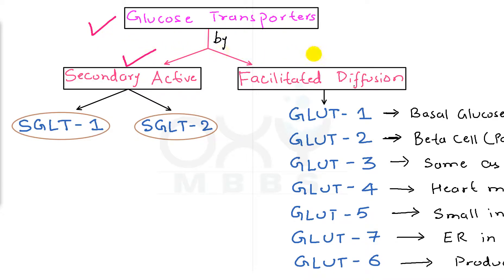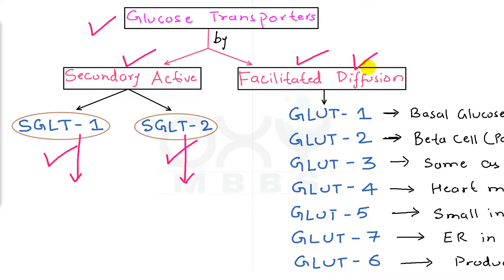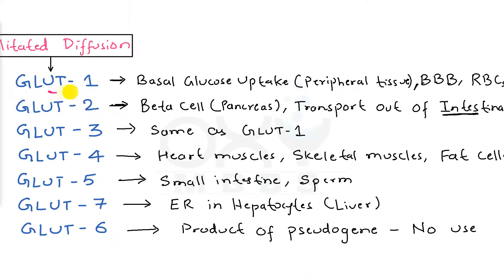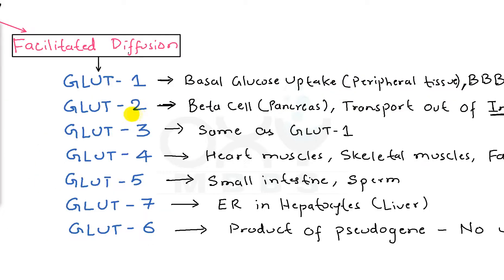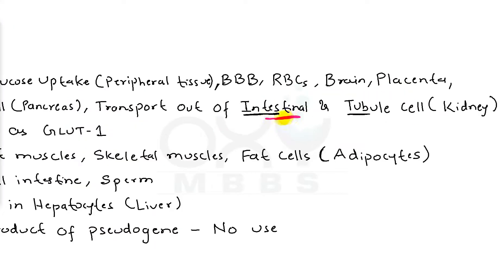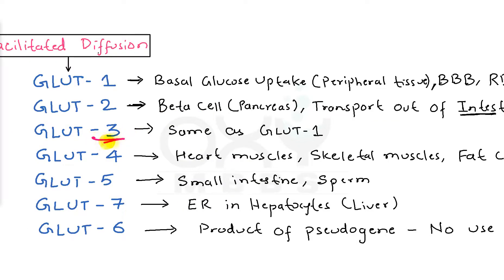Glucose is transported by two mechanisms: secondary active transport and facilitated diffusion. For secondary active transport we have SGLT1 (small intestine) and SGLT2 (kidney tubular cells). For facilitated diffusion we have GLUT1 through GLUT7. GLUT1 is present in peripheral tissues for basal glucose uptake, blood-brain barrier, RBCs, brain, and placenta. GLUT2 is in beta cells of the pancreas and intestinal and tubular cells for glucose transport out of the cell. GLUT3 is present wherever GLUT1 is present.